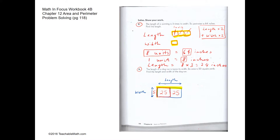In order for each square section to have an area of 25 square yards, it must have dimensions of 5 by 5. Similarly, the other section must also be 5 by 5. So the length of the dog run would be 10 yards — the two fives add to 10 — and the width would be 5 yards.